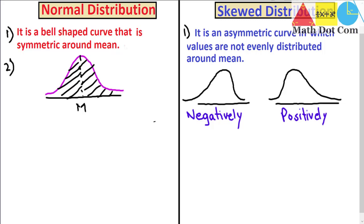In the negatively skewed diagram, the mean will be somewhere at one place, and in the positively skewed diagram the mean will be somewhere at another place. So the data is not evenly distributed on both sides of the mean. This is how they differ in their curves.